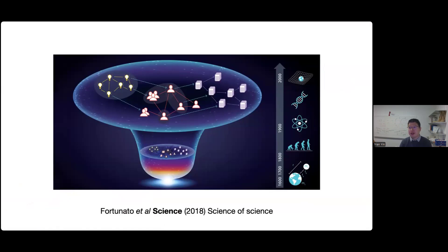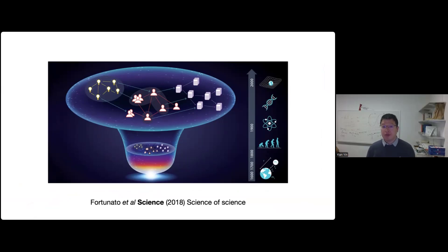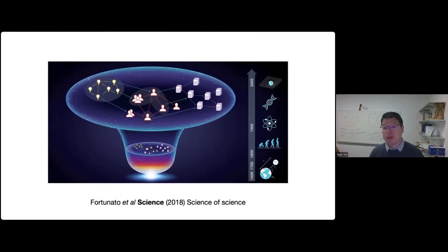The bulk of my research has been focused on this new emerging field that we call the science of science nowadays, which is basically thinking about how we use different approaches to better understand science itself as a complex system — thinking about questions such as how it evolves over time, and how it interacts with a broader society, including many of the socioeconomic systems that we may be interested in.